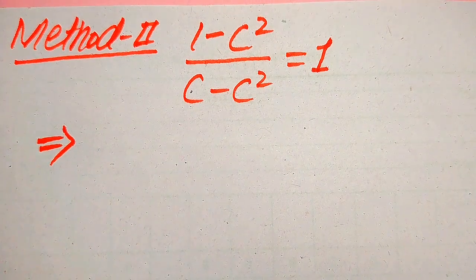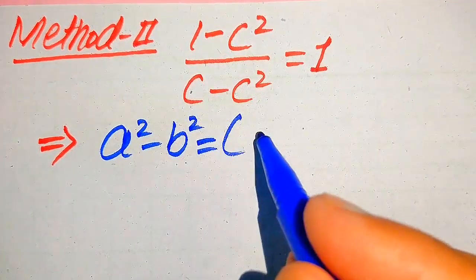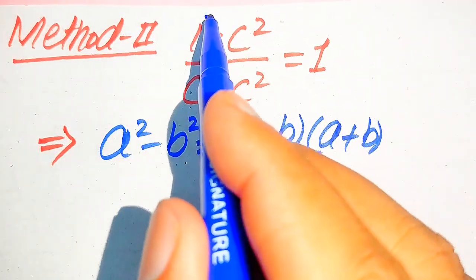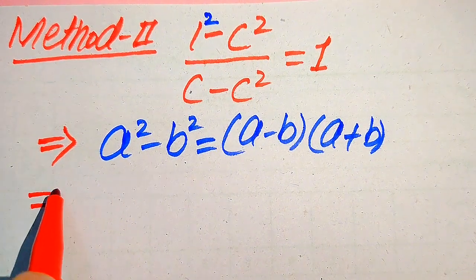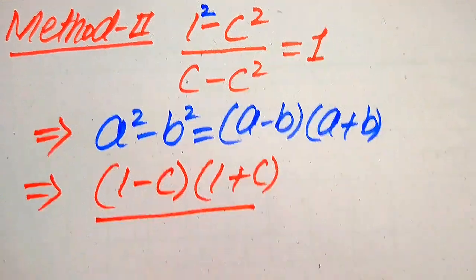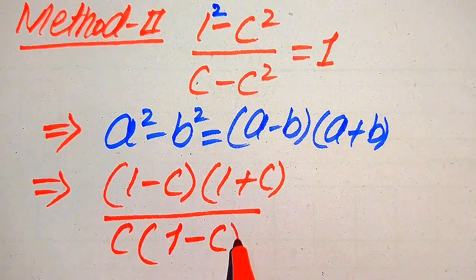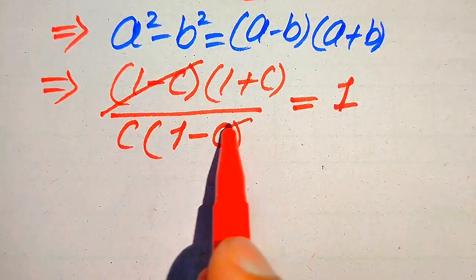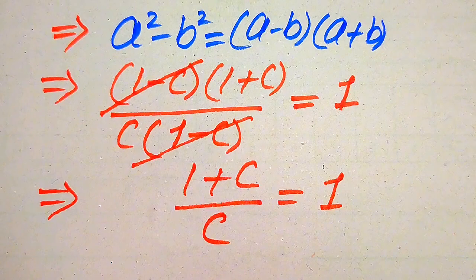In this method I use a nice algebra formula: A square minus B square is equals to A minus B times A plus B. We apply this formula by writing 1 as 1 square on the numerator. Applying the formula, the numerator becomes 1 minus C times 1 plus C. For the denominator we take C as common, giving us C times 1 minus C. So the expression becomes 1 minus C times 1 plus C divided by C times 1 minus C, equals 1. The 1 minus C cancels out, and we get 1 plus C divided by C is equals to 1.